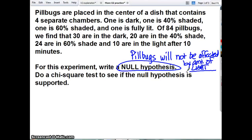So we are putting them in a dish. A dish, it has four separate chambers. One's dark, 40% shaded, 60% shaded, and fully lit. So these are going to be our four possibilities. Dark, what was it, 40%, 60% shade, and then fully lit.